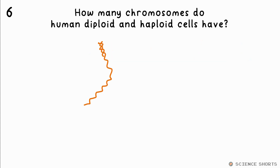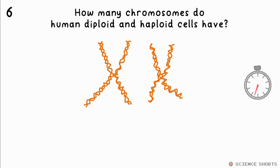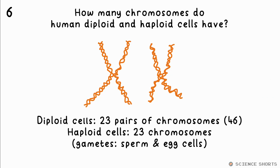Question 6. How many chromosomes do diploid and haploid human cells have? Diploid means two sets of chromosomes, so humans have 23 pairs, or 46 in total. Haploid cells just have one set, so that's just 23 chromosomes. These are your gametes — sperm and egg cells.